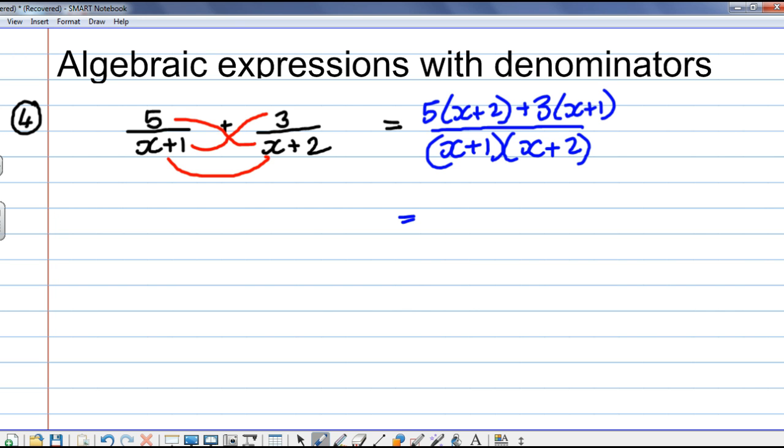Now, I'll multiply out the numerator. We get 5x plus 10. That's 5 times x plus 2. Now, plus 3 times x plus 1 gives me plus 3x plus 3. And now, I'll multiply this out.